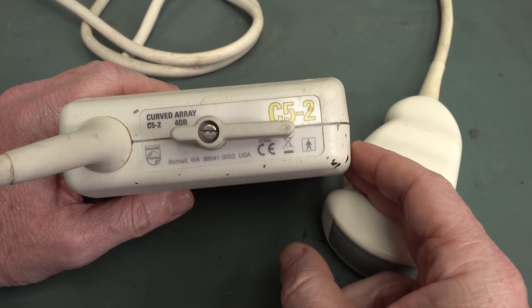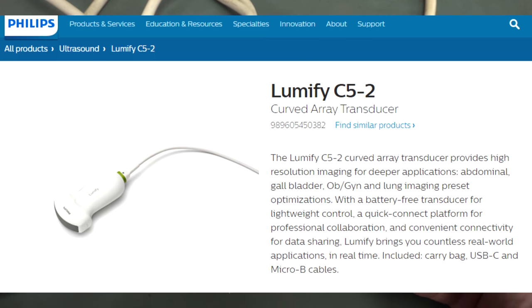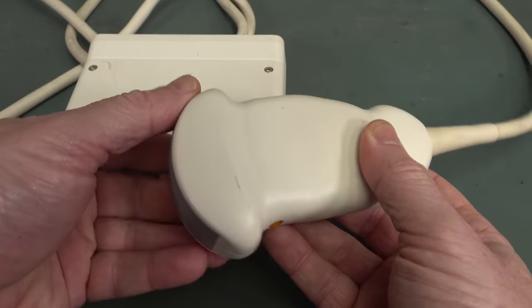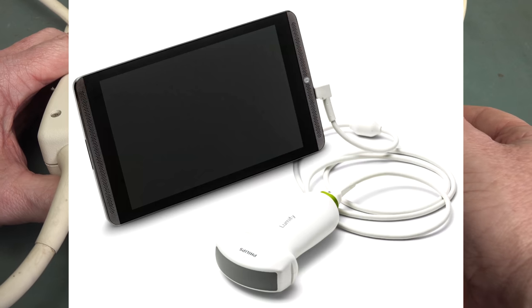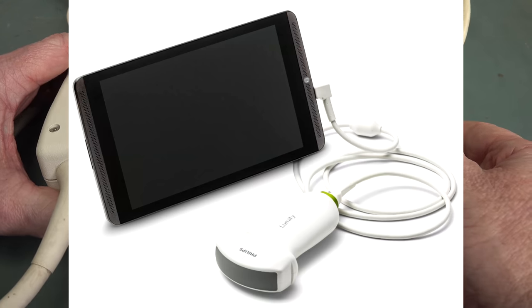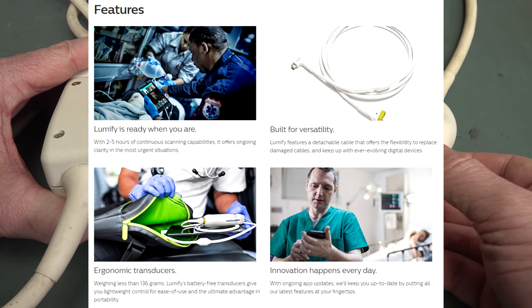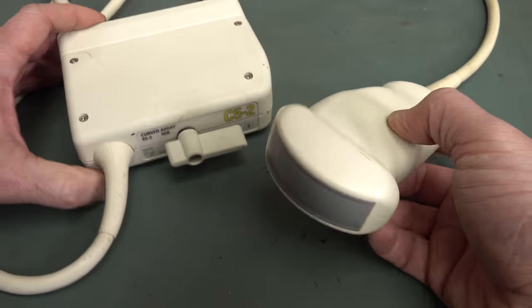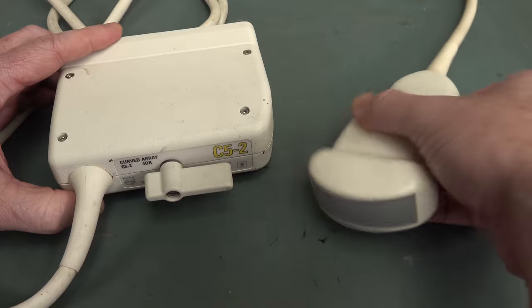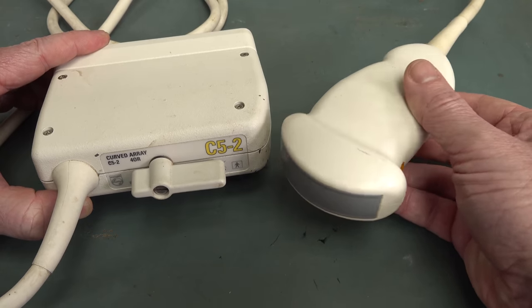This is one of the probes compatible with the HDI 3000 ultrasound, the C5-2 curved array. This is Philips branded because Philips bought out ATL in the mid-90s. This is the C5240R. Philips currently sell a C5-2 ultrasound probe that looks very similar to this. This is actually a curved array - that's why they call it a curved array, because it's actually curved like that. This particular curved array, the C5-2, operates from 2 MHz to 5 MHz range, and it's got a 67-degree field of view.